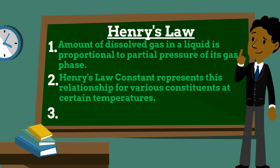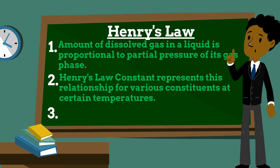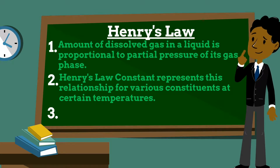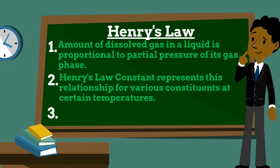The law contains a proportionality factor called Henry's law constant. Various units are used by different investigators for concentrations in the liquid and gas phases, so the units for Henry's constant will vary from problem to problem and contaminant to contaminant. Because of this, care must be taken in using this relationship, especially when obtaining constants from various sources.